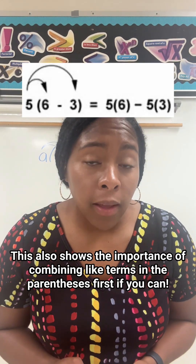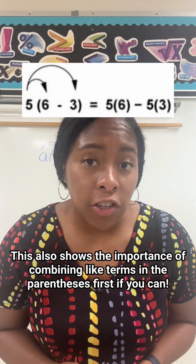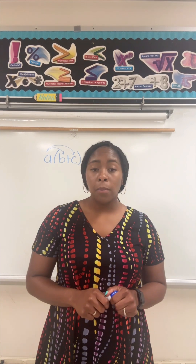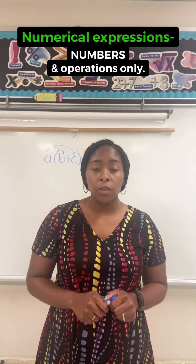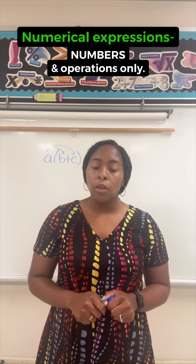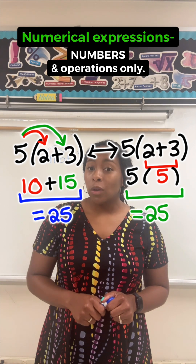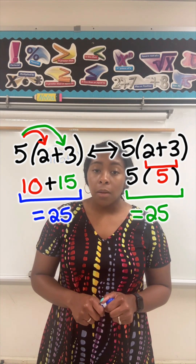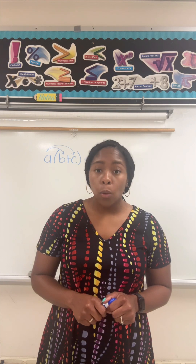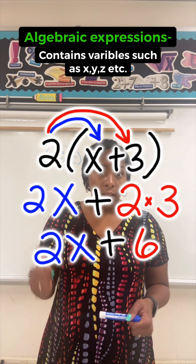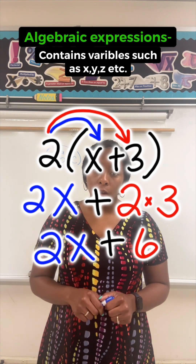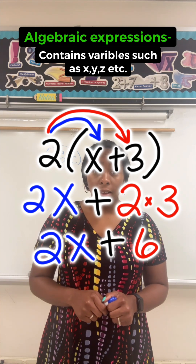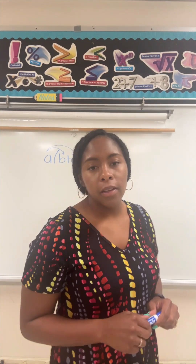You can also distribute multiplication over subtraction, and distribute exponents over exponents. When first learning this property, it's usually taught using numerical expressions — meaning only numbers — which helps show how the property works and proves it's true. Practicing with numbers helps build a good foundation for algebra, and we can also work with algebraic expressions that contain variables. For example, we can distribute the multiplication of 2 to x and 3.